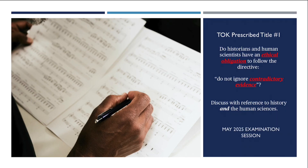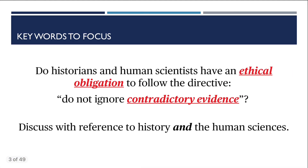With this video, I'm going to break down the TOK SA Prescribed Title No. 1 for the 2025 May examination. The first Prescribed Title is: 'Do historians and human scientists have an ethical obligation to follow the directive? Do not ignore contradictory evidence.' Discuss with reference to history and the human sciences. Let's break down this Prescribed Title first before moving into the outline.